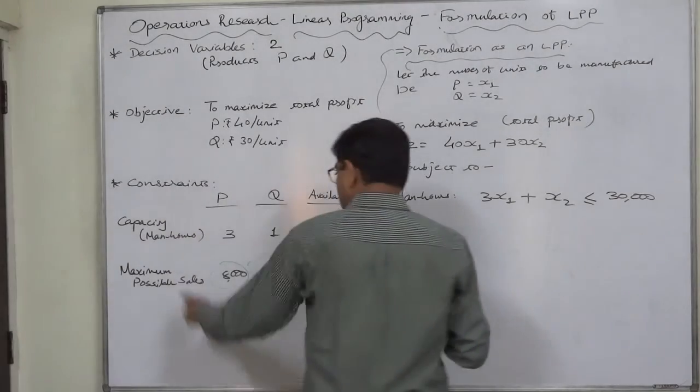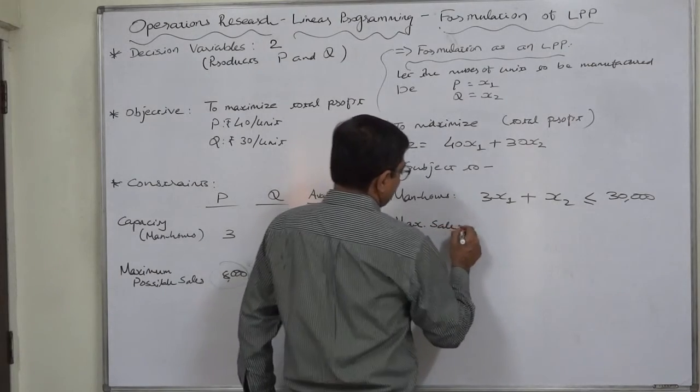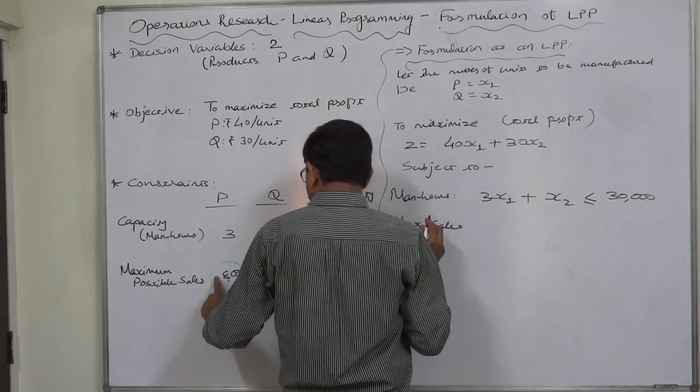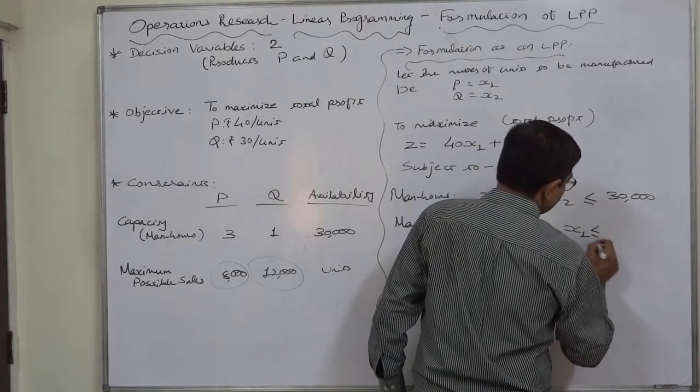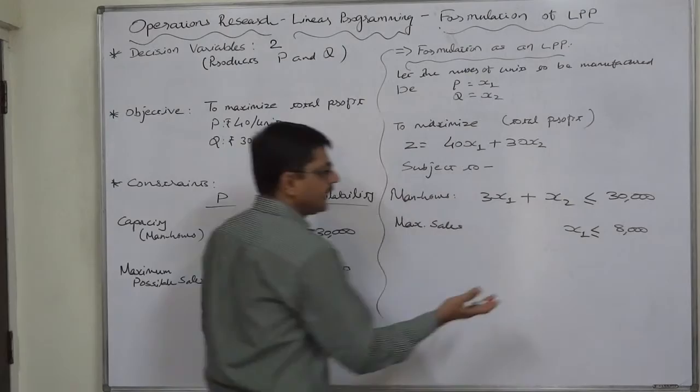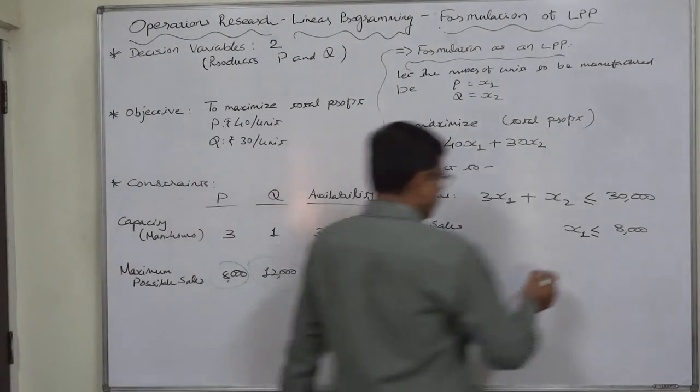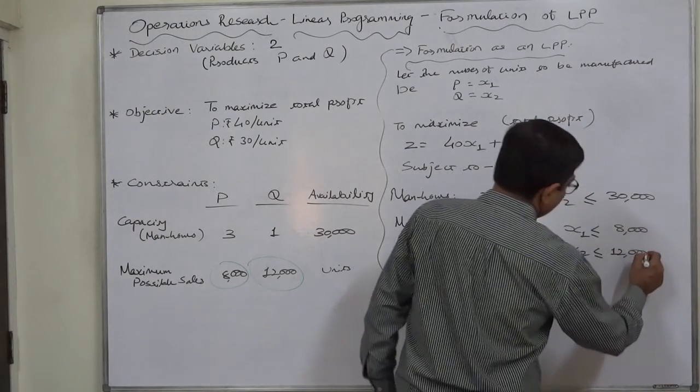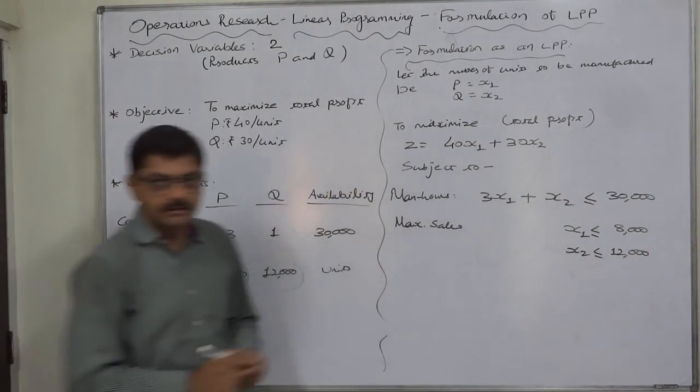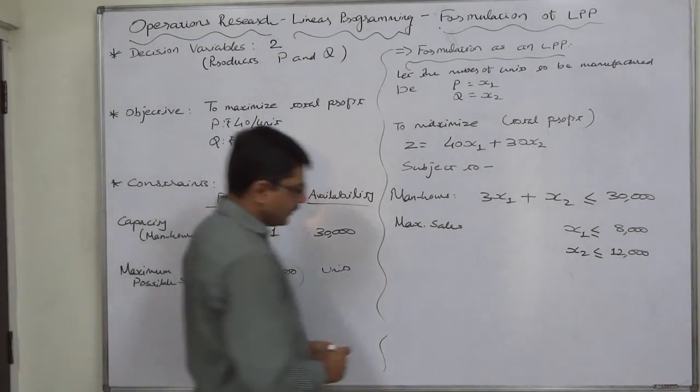Maximum possible sales of P is 8,000, so the value of X₁ can never be greater than 8,000. We cannot sell more, so why should we manufacture more? Similarly, X₂ ≤ 12,000. We cannot sell more than 12,000, so why should we manufacture more than 12,000 units?